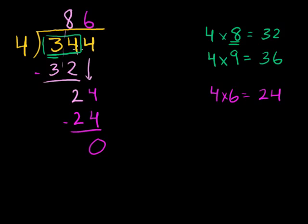So 4 goes into 24 six times, and we put that in the ones place. 6 times 4 is 24. And then we subtract 24 minus 24, and we get 0. So there's no remainder. So 4 goes into 344 exactly 86 times. Let's do a couple more problems.